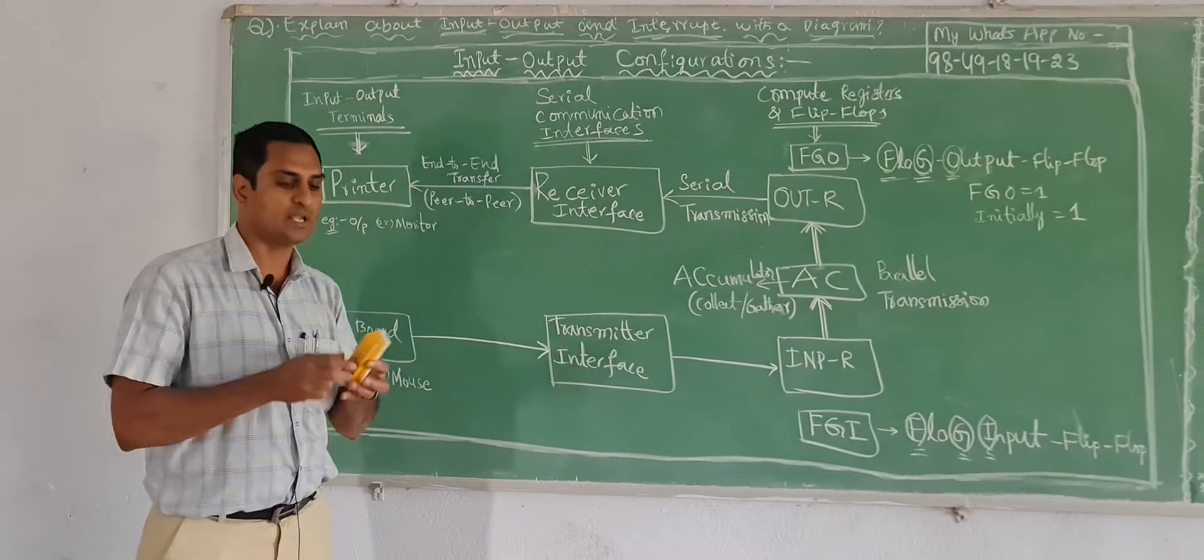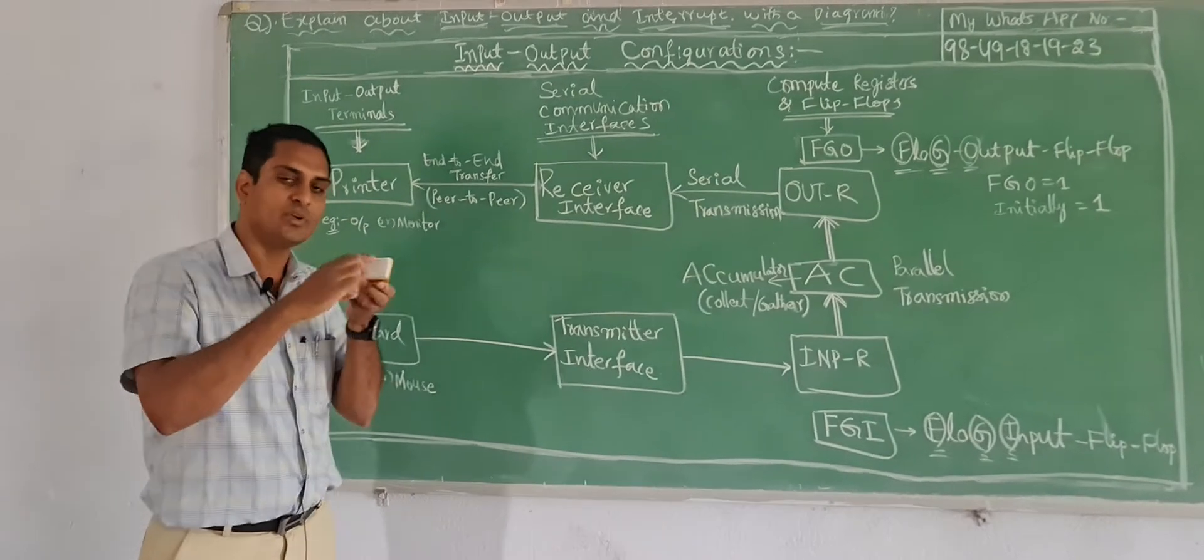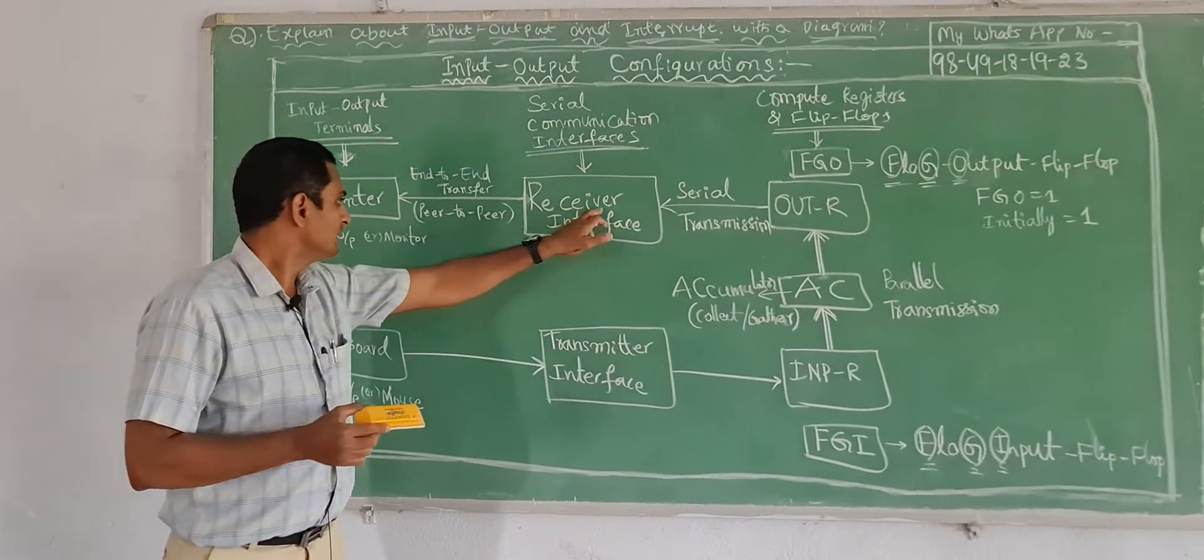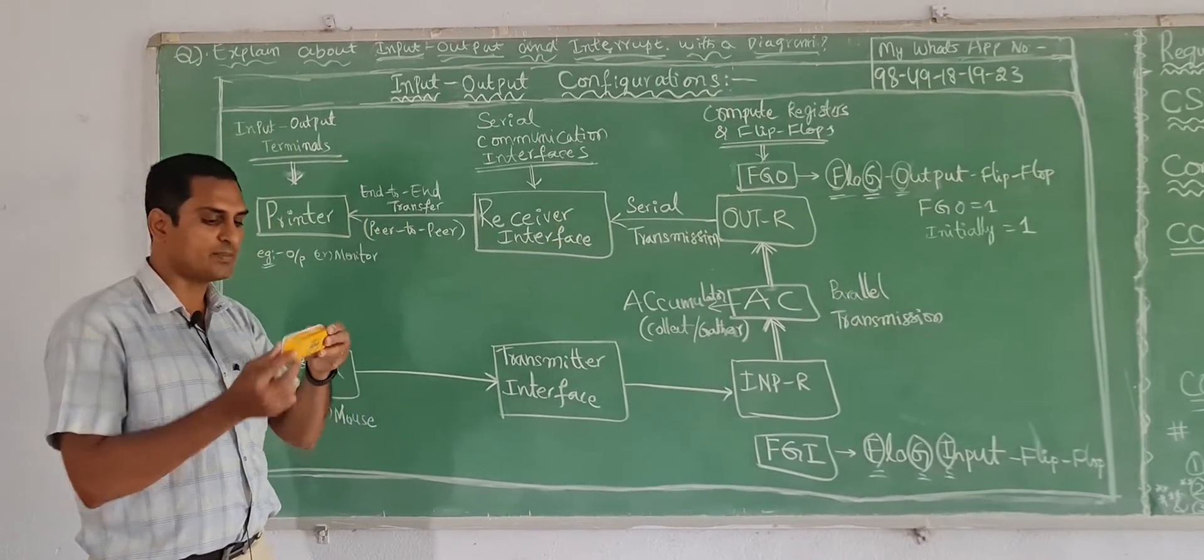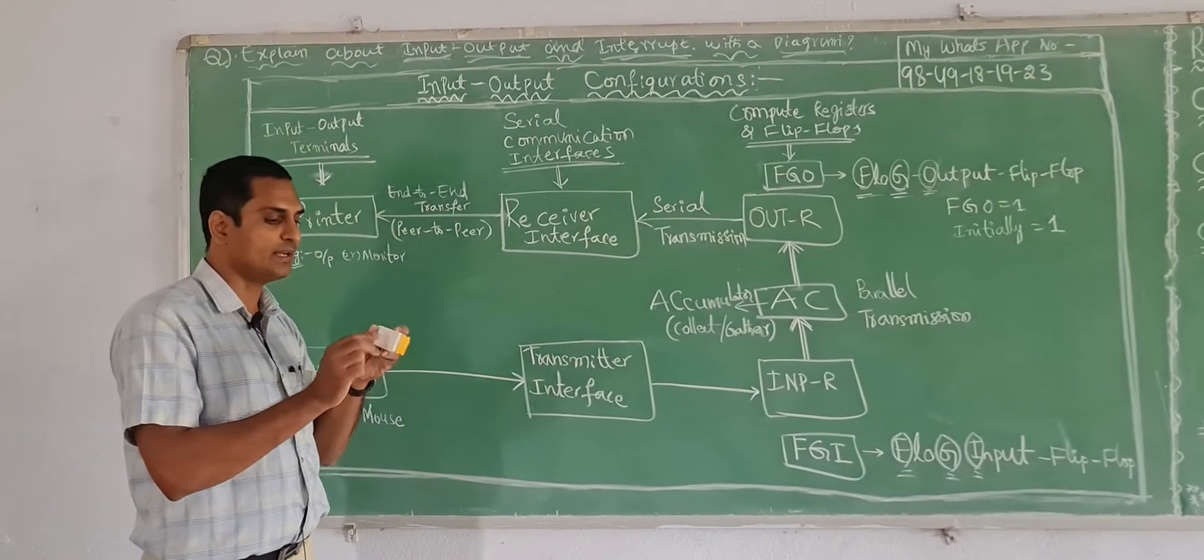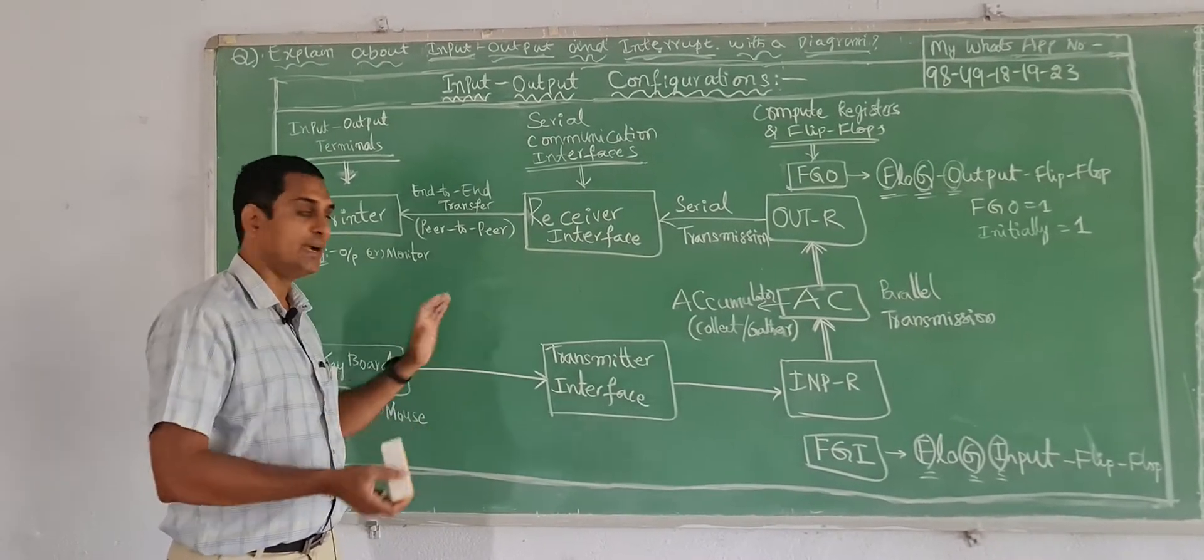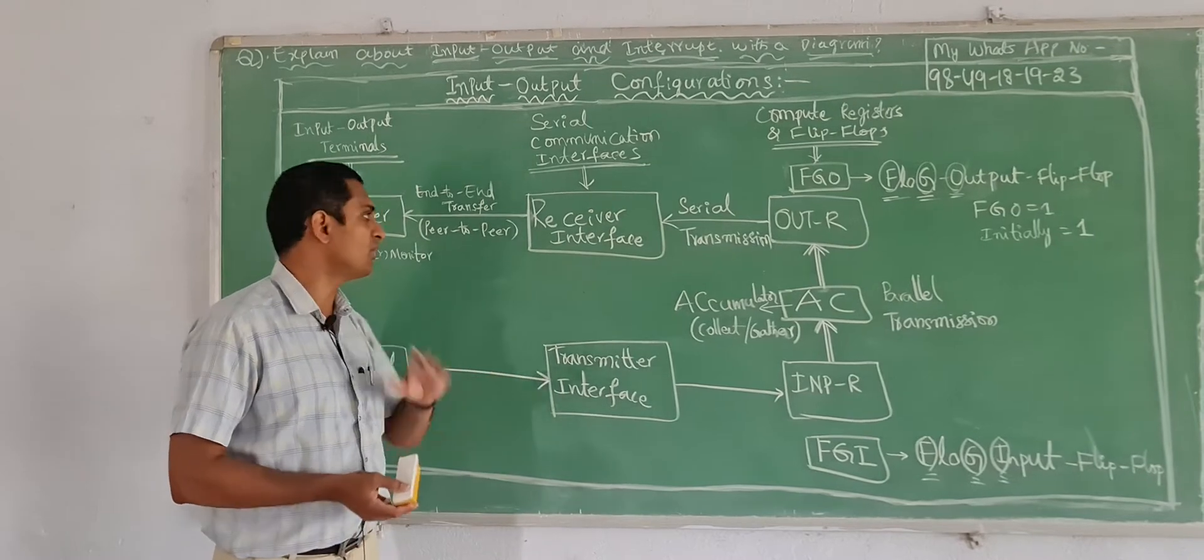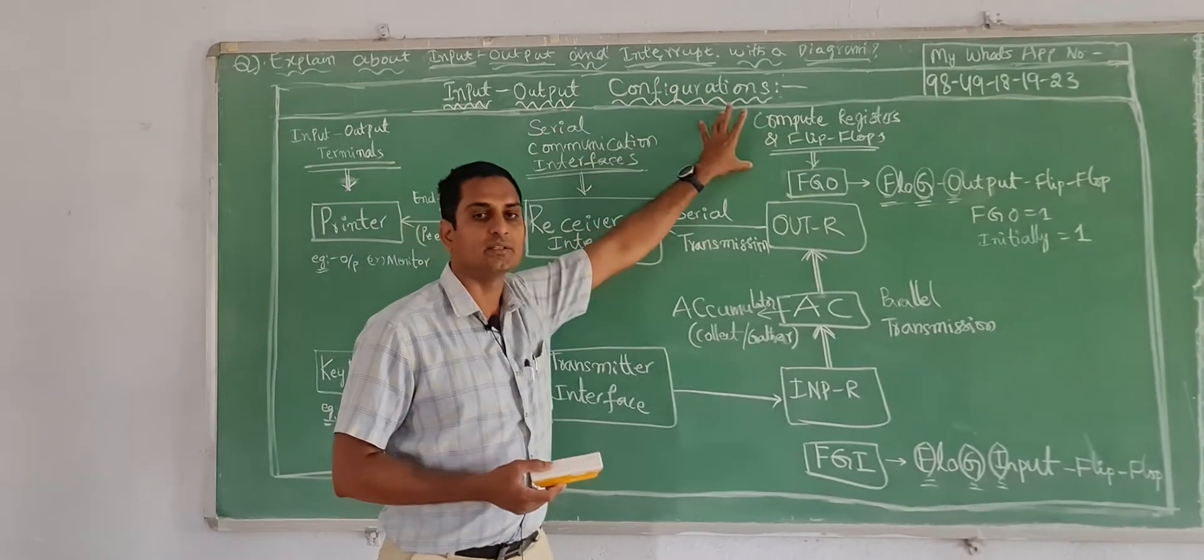While you are watching this video also, make your phone not vertical, make it horizontal so you can view the sentences easily. In your exam also, sometimes make the question paper horizontal and draw the diagram big and explain the flow of the diagram. The title of the diagram is input output configuration.